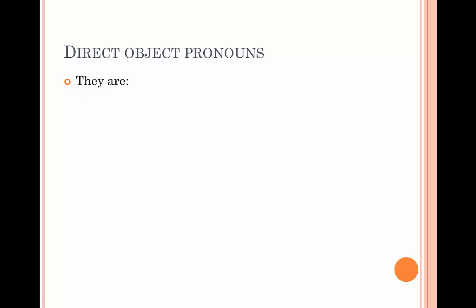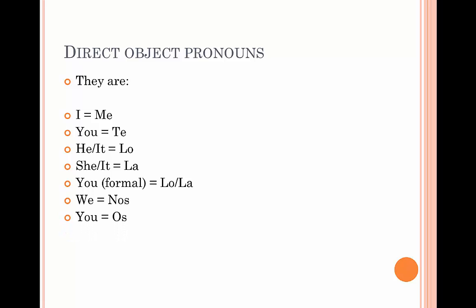Now, for direct object pronouns, we use: me for I, te for you, lo for he or it, la for she or it, lo or la for you in the formal sense, nos for we, os for you, los for they, and las for they.